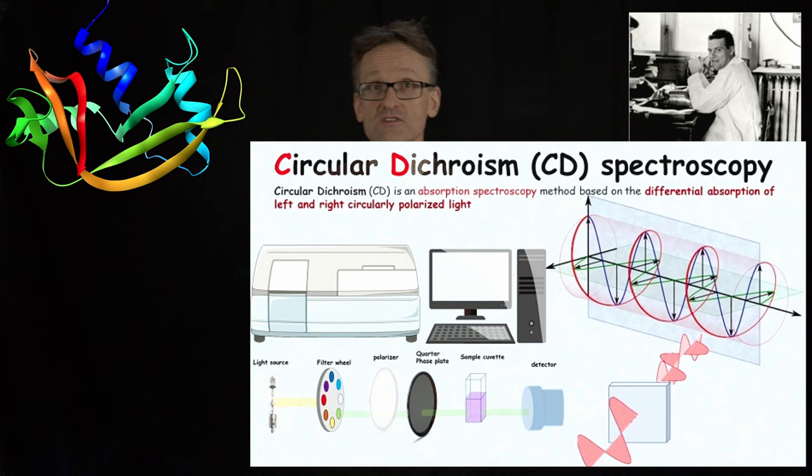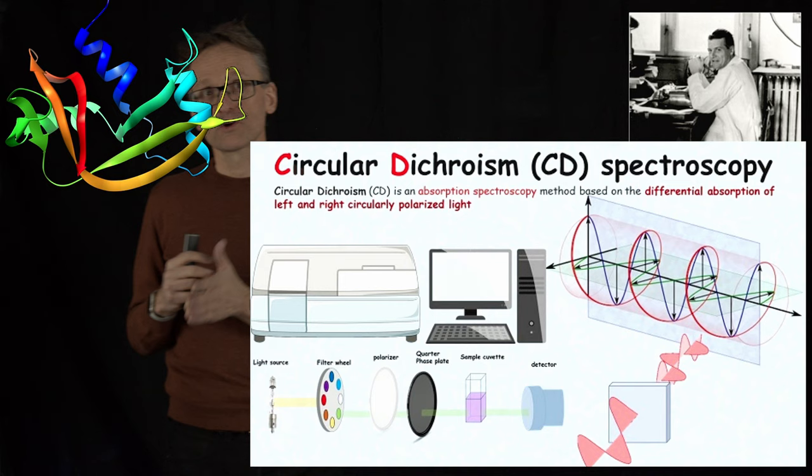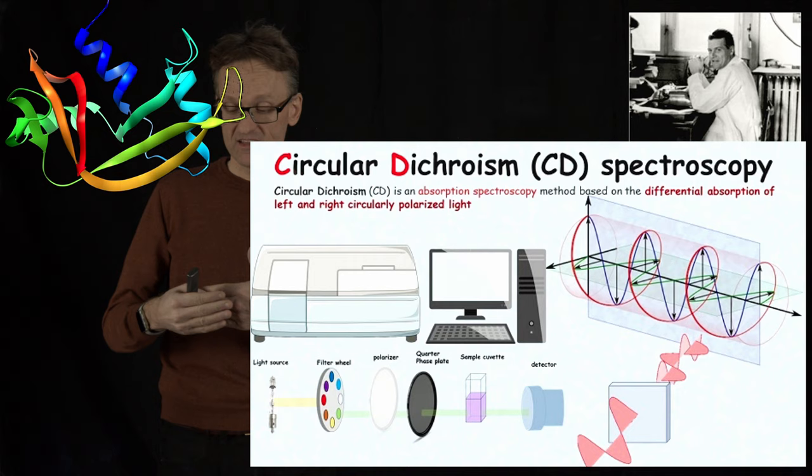CD stands for circular dichroism, and in a way it's a somewhat fancy way of describing working with polarized light. For technical reasons we don't work with horizontal and vertical polarized light but we tend to work with circular polarized light, meaning that the vertical and horizontal components are offset from each other by a quarter of a phase.